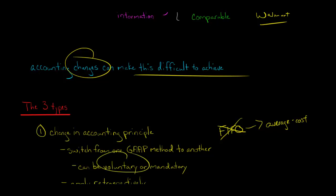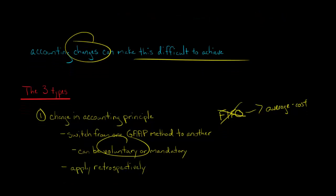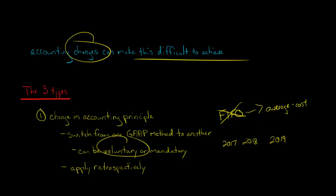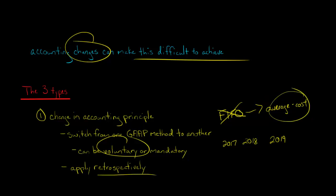This would be an example of a voluntary change in accounting principle, and we're going to account for it retrospectively. Retrospectively means we go back to the previous years' financials — for instance, looking at a company's 10-K with 2019, 2018, and 2017 data — and we recast those prior period financial statements as if the company had been using the weighted average cost method all along.